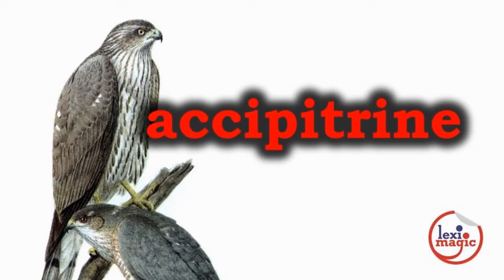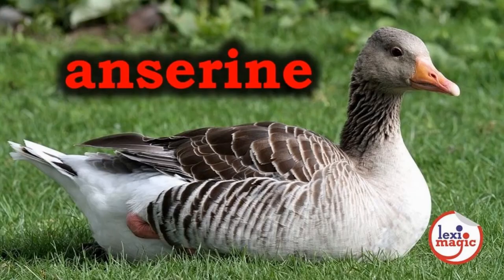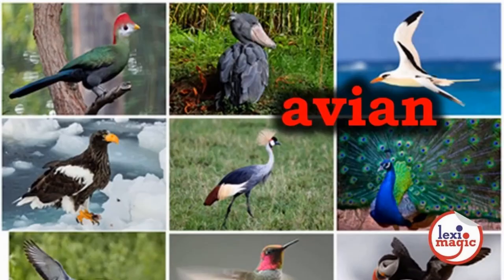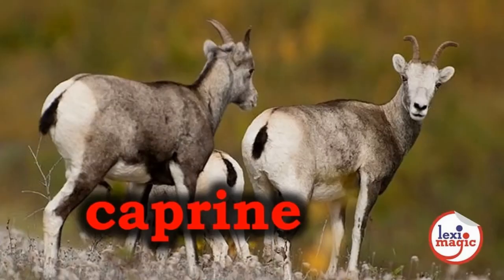Accipitrine relates to falcons, vultures, or ospreys. Ansrine means like a goose. Apian relates to bees. Avian relates to birds. Caprine relates to goats.